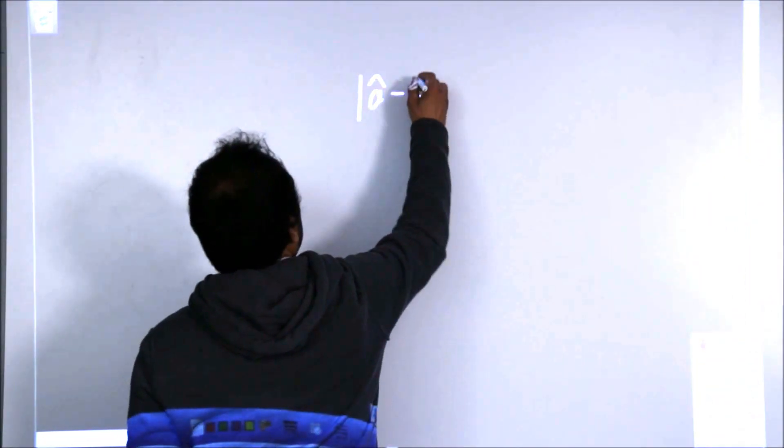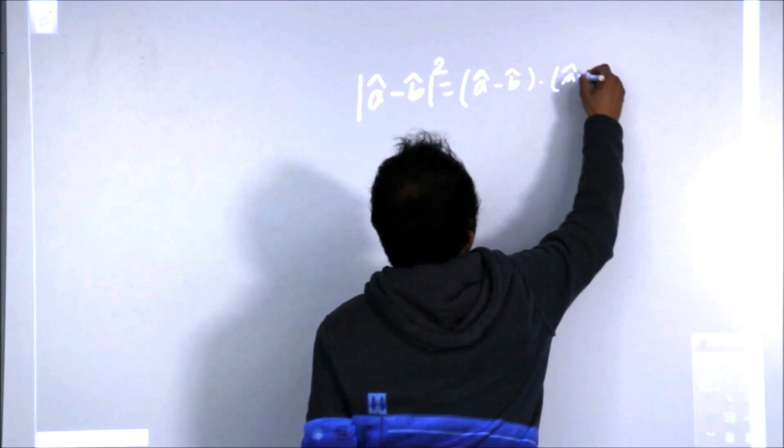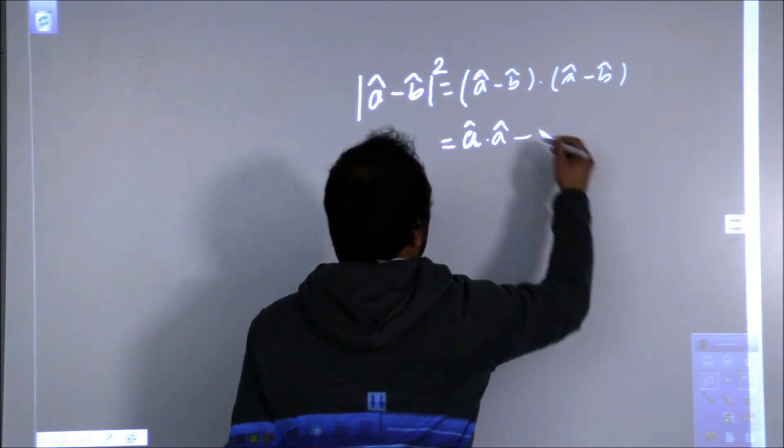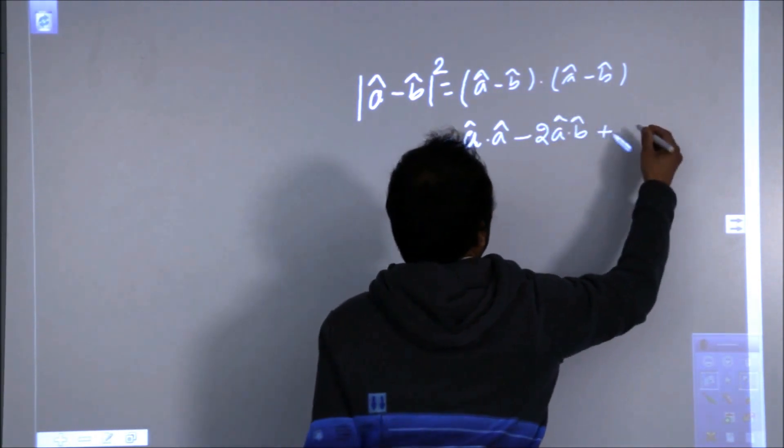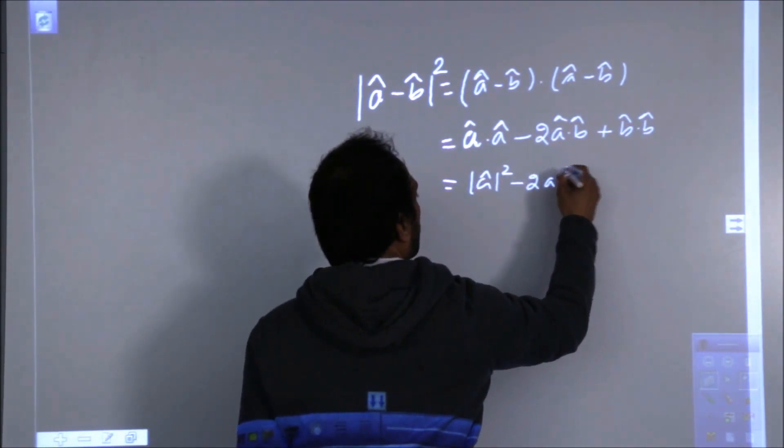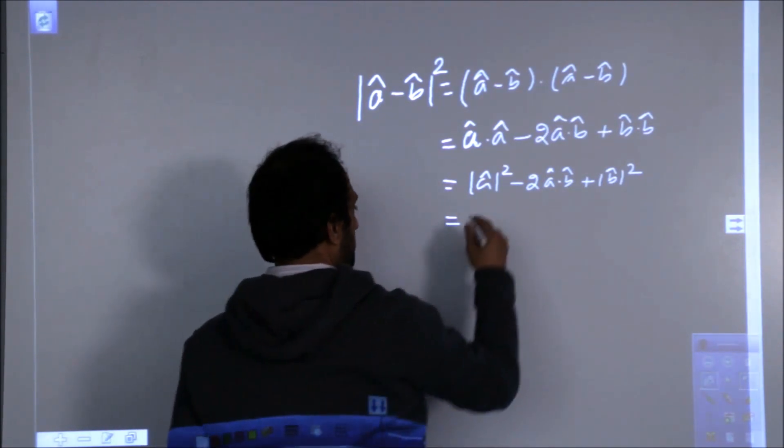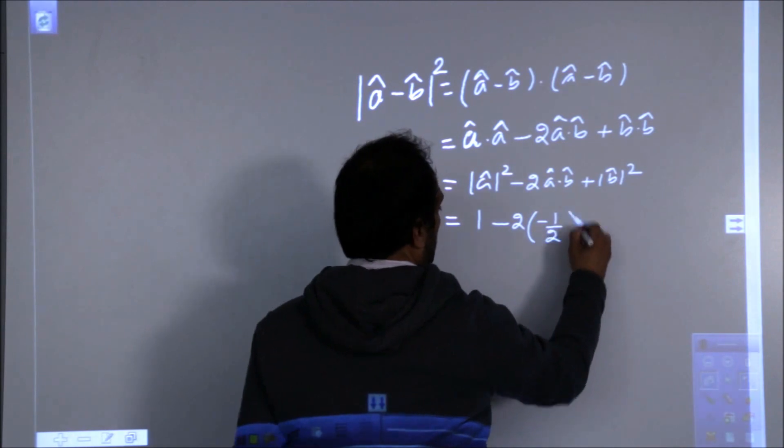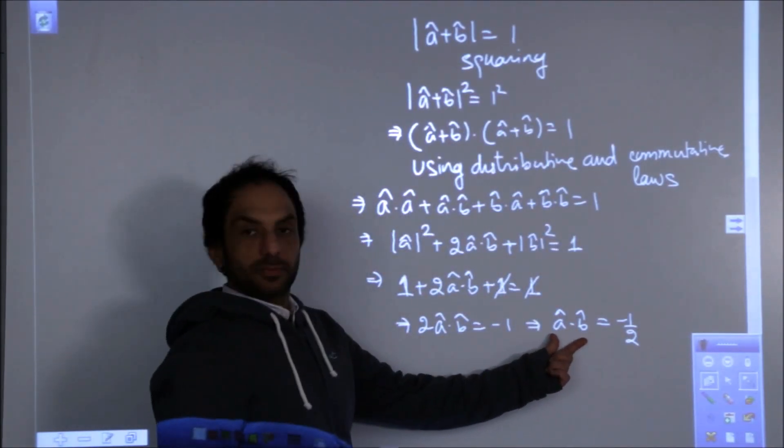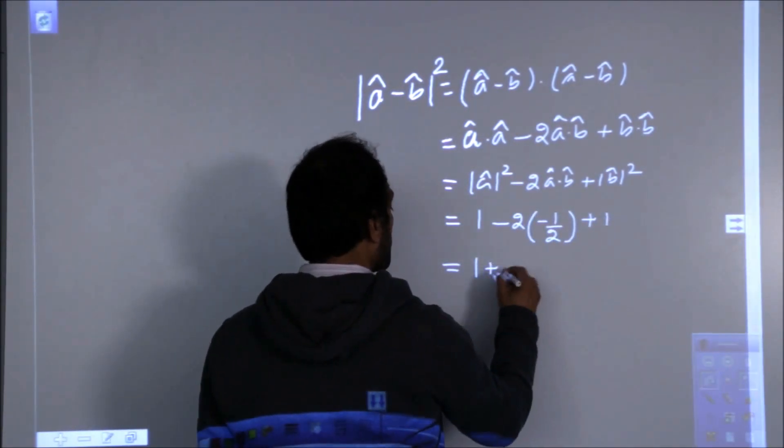Now, taking this and squaring, what we get, we get a dot a minus 2 times of a dot b plus b dot b. So from the previous result, we can put the value, do you remember the value? This was minus half, this value is minus 1 by 2, a dot b is minus 1 by 2. So we are substituting this value here and the result is coming 1 plus 1 plus 1 which is 3.